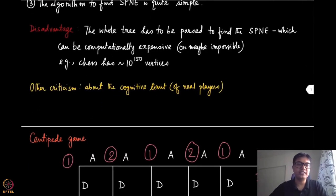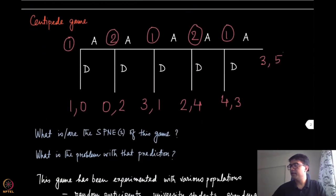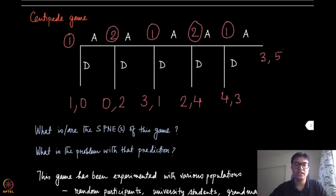SPNE also has some other criticisms, and these are mostly about the behavioral aspects. So it asks about the cognitive limit of real players. So let's give an example. This game is called the centipede game, particularly because of the structure of this game, it looks like a centipede. So in every round of this game, or every stage of this game, every player, players take turns and play this game and they have two options to pick one action: play across or play down.